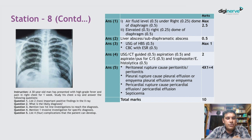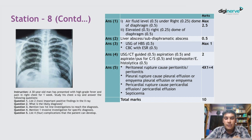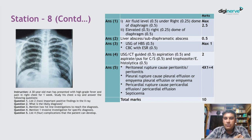Two first-line investigations to reach the diagnosis are ultrasonogram of the hepatobiliary system and CBC with ESR. Note that CT scan is not accepted as a first-line investigation here because the question asks for first-line. One invasive investigation for specific diagnosis is ultrasound or CT-guided aspiration, sending the aspirate for culture sensitivity and looking for trophozoites of Entamoeba histolytica.